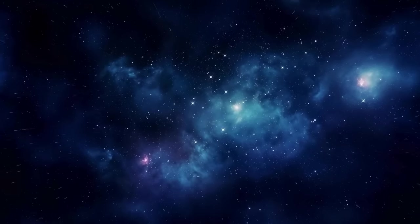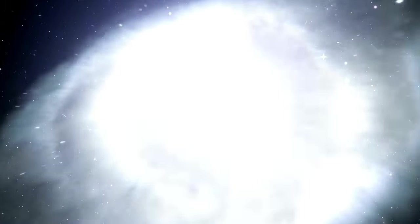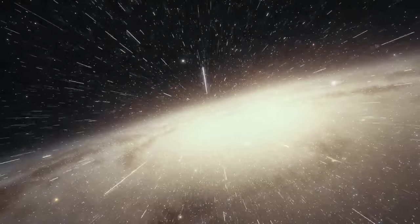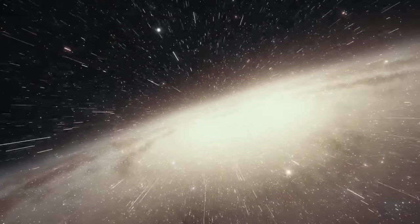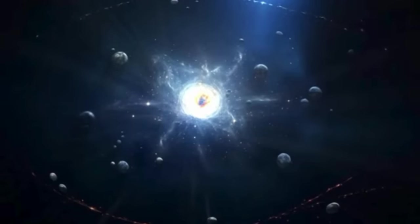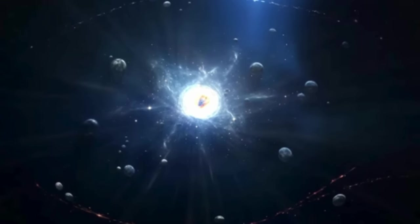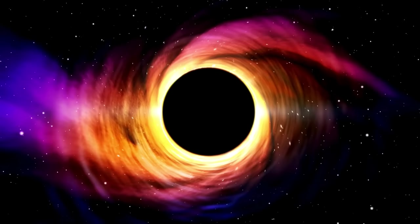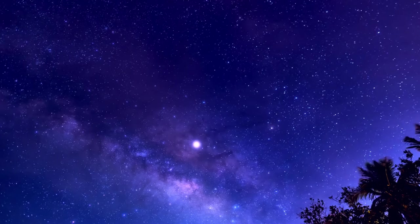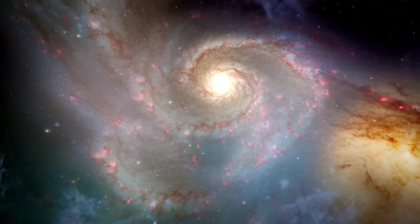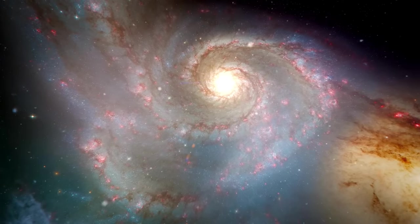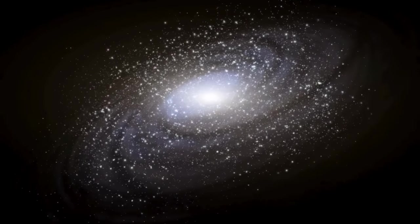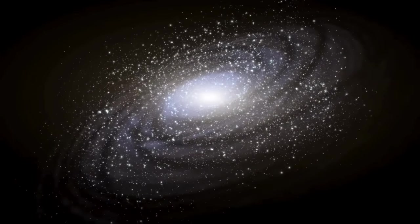After our Milky Way and Andromeda, the next heavyweight in our local group is the Triangulum Galaxy, or M33. This is another spiral galaxy, but it's a bit smaller with a mass of around 50 billion times that of our sun. There's a bit of a question mark around Triangulum's relationship with Andromeda. They're not far from each other in cosmic terms, just 750,000 light years apart. About 2 to 4 billion years ago, they had a close encounter that sparked a lot of star birth in Andromeda.